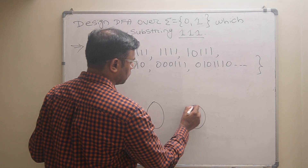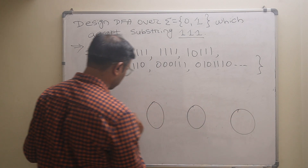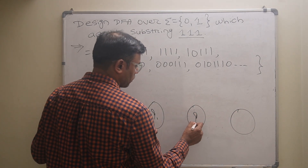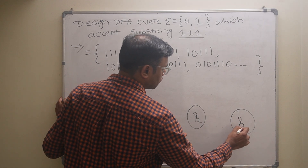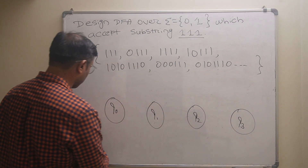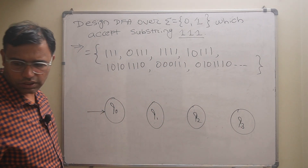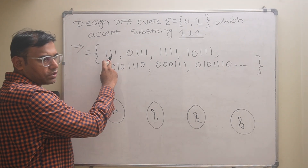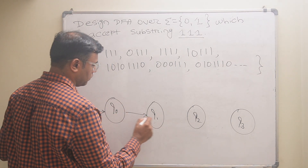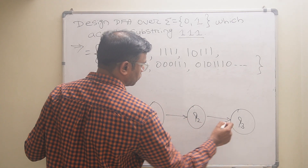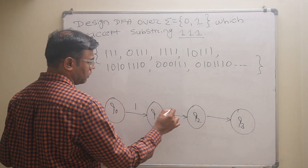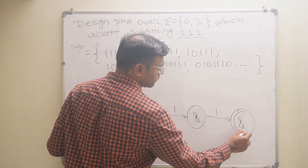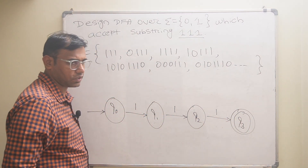I will draw the four states: q0, q1, q2, q3. Taking the string 111 first, the DFA transitions on 1, 1, 1 through q0 to q1 to q2 to q3. q3 will be the final state — as of now, though it may change.